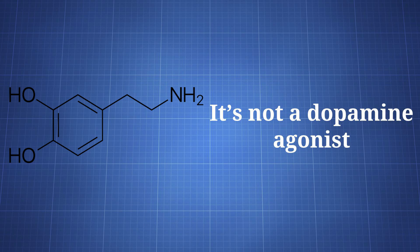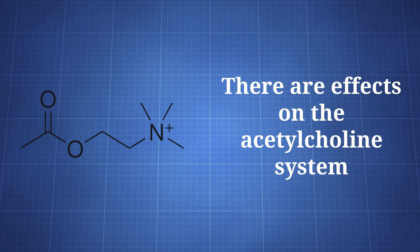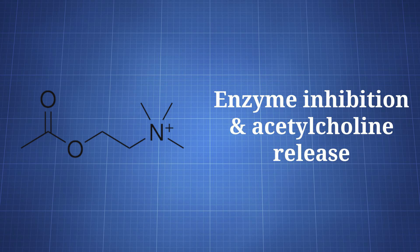It's not a dopamine agonist, but it does affect dopamine binding, since some adenosine receptors are part of complexes that include dopamine receptors. Caffeine has effects on the acetylcholine system through the inhibition of an enzyme that normally breaks down acetylcholine, and it can stimulate the release of acetylcholine.